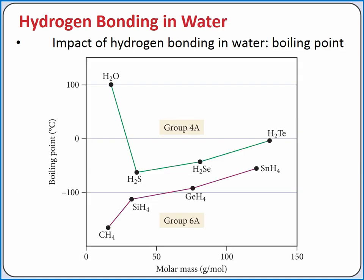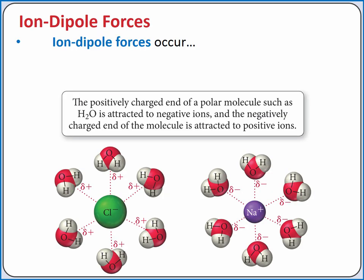We can also see the effect of hydrogen bonding in water. If water did not have hydrogen bonding, we might expect it to have a boiling point somewhere around negative 80 degrees Celsius based on its molar mass in comparison with other compounds. But the presence of hydrogen bonding increases the intermolecular forces by so much that the boiling point increases to 100 degrees Celsius.